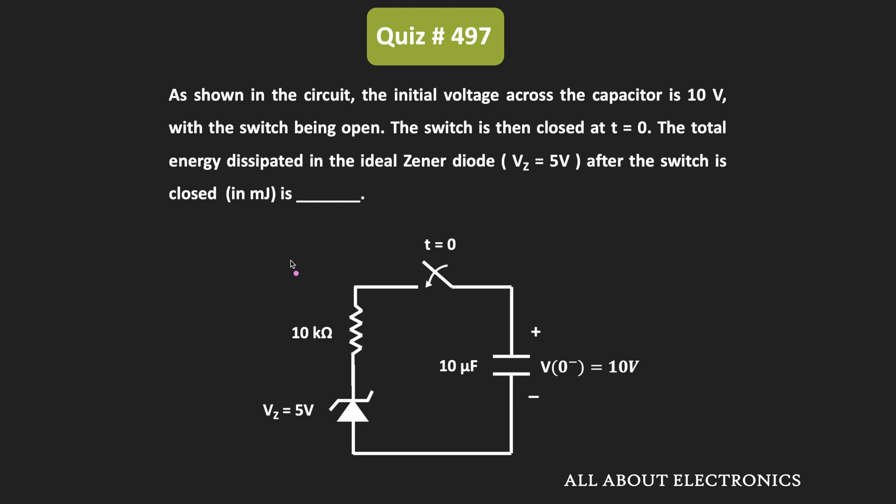Hey friends, welcome to the YouTube channel All About Electronics. In this question, we have been given a circuit, and we have been asked to find the total energy that is dissipated across this Zener diode.